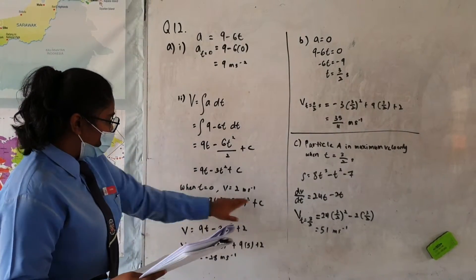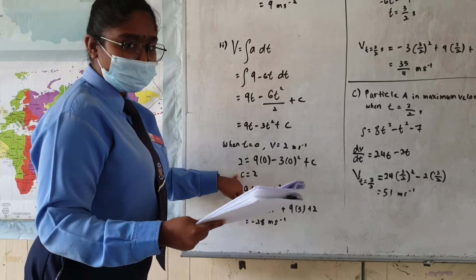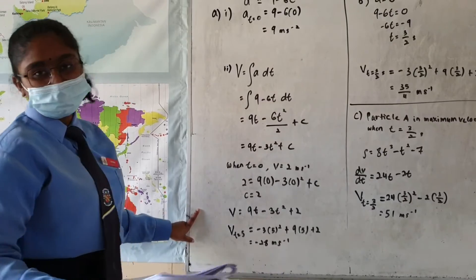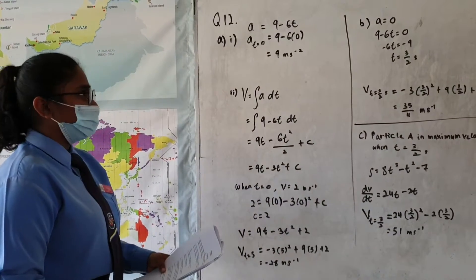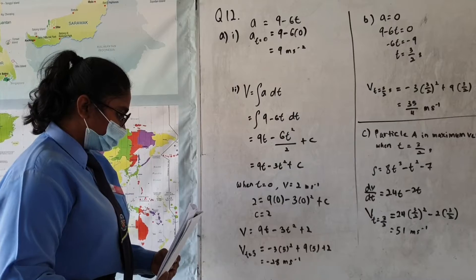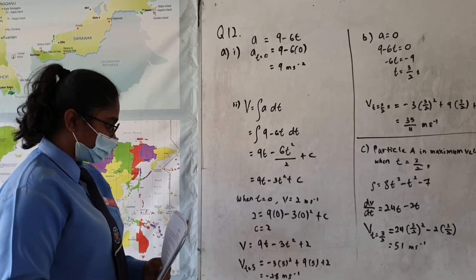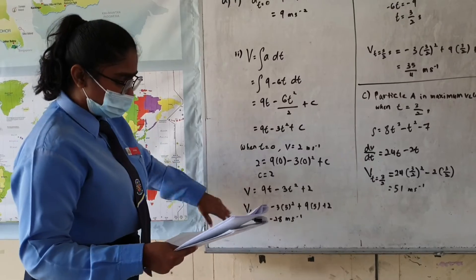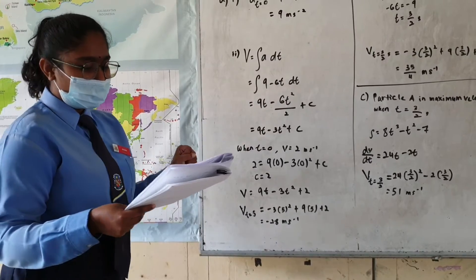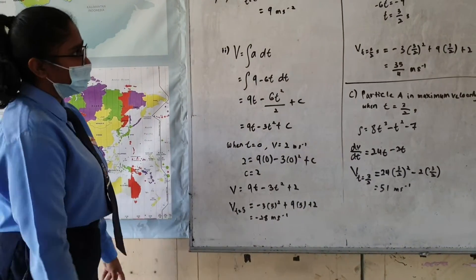When you substitute the initial velocity — time is zero because it is initial velocity — you will get C equals 2. So this is the velocity function. Always find the value of C. To find the value of C, read the question — the initial velocity is 2 meters per second, so initial velocity means t equals zero. Once you have the velocity function, substitute t equals 5 to get your answer.